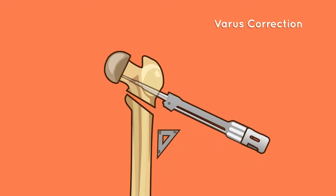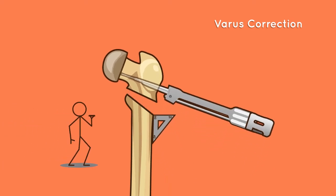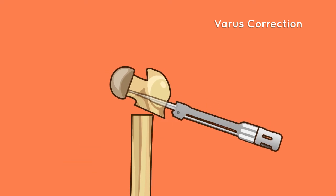For varus correction of coxa valga, perform a first osteotomy cut parallel to the joystick surface, exercising the proper degree of caution to prevent saw incursion into the femoral neck. Remove any overlapping or excess bone in the area of the plate's transition.